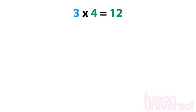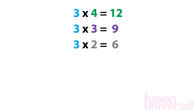If we move down the 3 times table, we get 3 times 3 is equal to 9, which is 3 less than 12. Another step down gives us 3 times 2 is equal to 6 — another 3 less. Each step down the table reduces the value by 3, so when we get to 3 times 0, it must be 0.